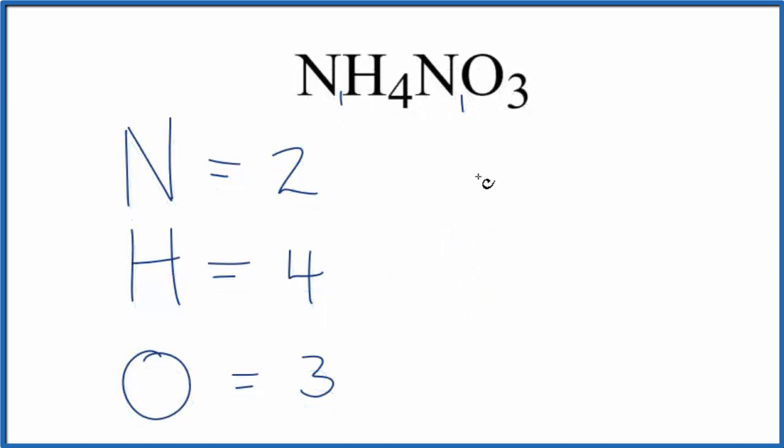Sometimes you're asked to figure out how many atoms are in one mole of ammonium nitrate. To figure that out, you take the number for each element, say for nitrogen here, two, and you multiply that by Avogadro's number. And that'll give you the number of atoms of nitrogen in one mole of ammonium nitrate.